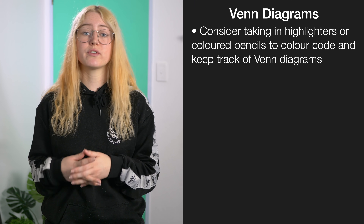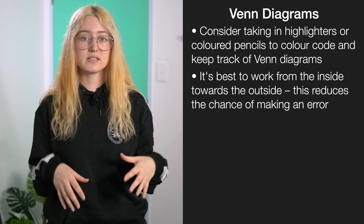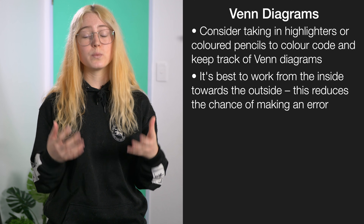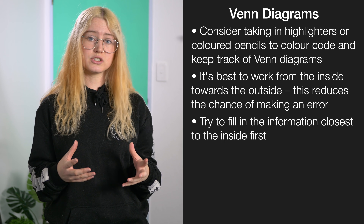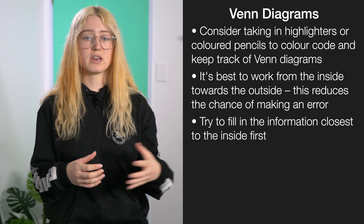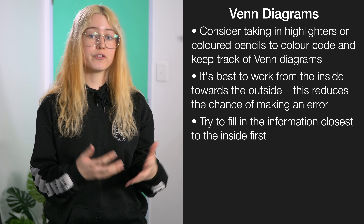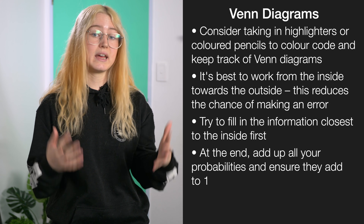For Venn diagrams, the easiest way to keep track of everything is to use colour — we recommend taking in highlighters or colouring pencils. Quite often you'll need to work from the inside out, which helps avoid mistakes. Try to place the information that goes in the middle first, and use context clues for anything else. When you've fully completed your Venn diagram, add up all of your probabilities and make sure they add to one.